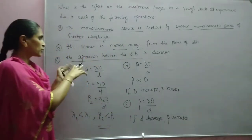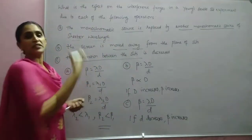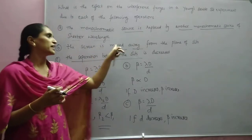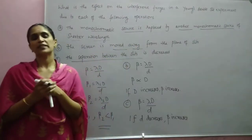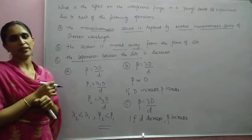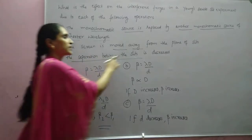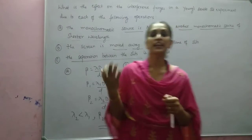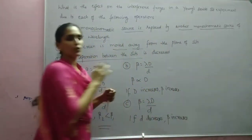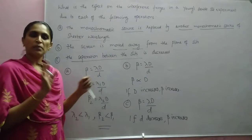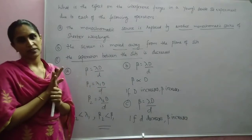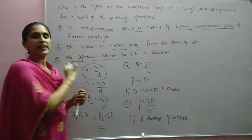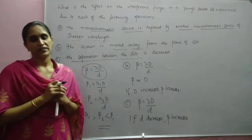Sometimes they will give similar variations — instead of smaller wavelength, larger wavelength is used; instead of the screen moved away, screen is moved towards the slits; or instead of decreased separation, they may give it as increased. In all those cases, you can use the expression for fringe width and check whether any possibility is there to relate that expression to the answer.